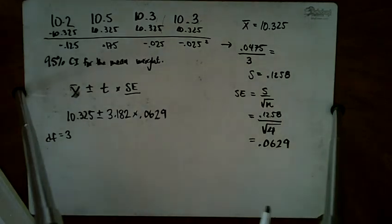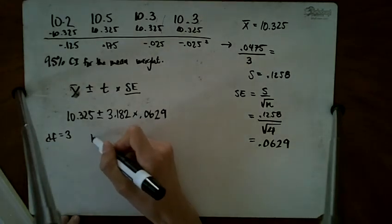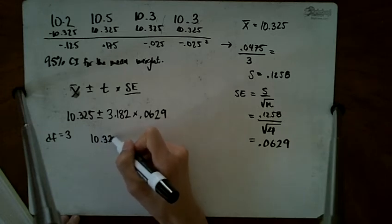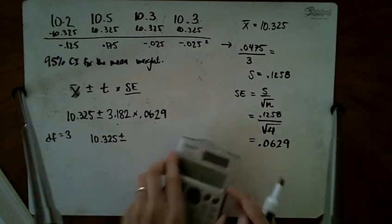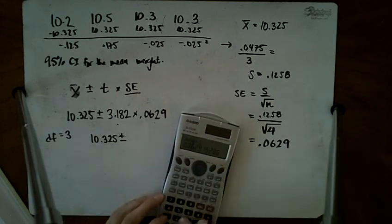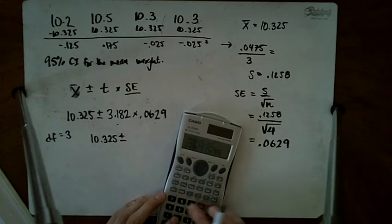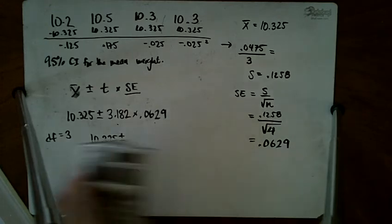So my confidence interval is 10.325 plus or minus this number times this number: 3.182 times 0.0629.